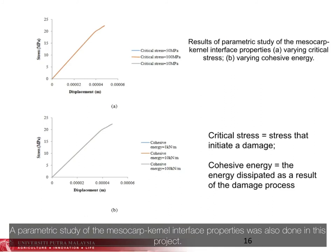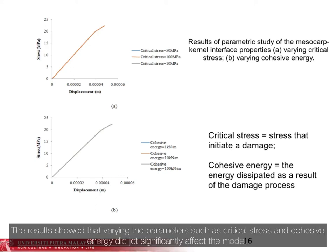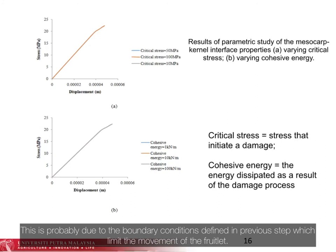A parametric study of the mesocarp canal interface properties was also done in this project. The results showed that varying the parameters, such as critical stress and cohesive energy, did not significantly affect the model, probably due to the boundary conditions defined in previous steps, which limit the movement of the fruitlets.